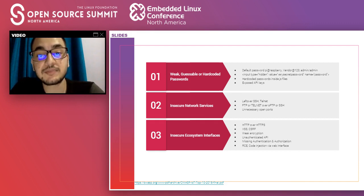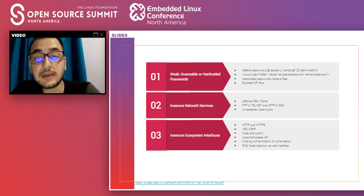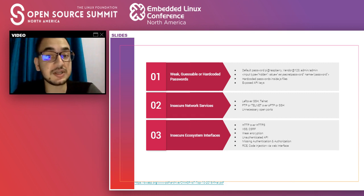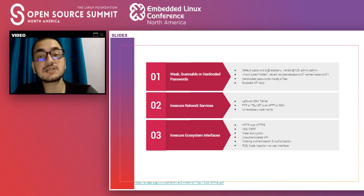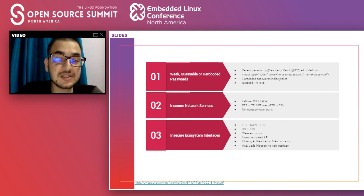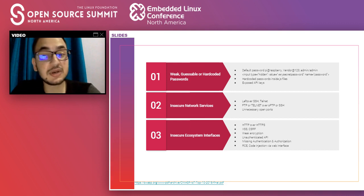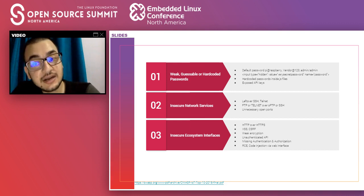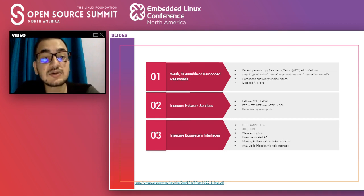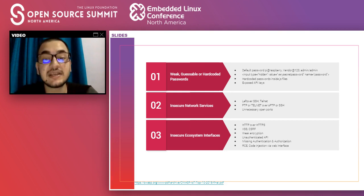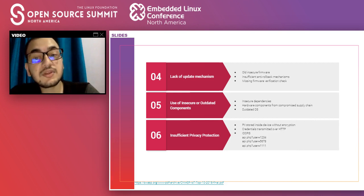The third on the list is insecure ecosystem interfaces. This includes all vulnerabilities inside mobile applications, web interfaces, APIs, cloud consoles, and other ecosystem components. Commonly found vulnerabilities include cross-site scripting (XSS), remote code execution, OS command injection, CSRF on web interfaces, and on APIs: unauthenticated APIs, SQL injection, and over-privileged APIs. On mobile applications, this includes hard-coding of sensitive information inside binaries and insecure third-party components.